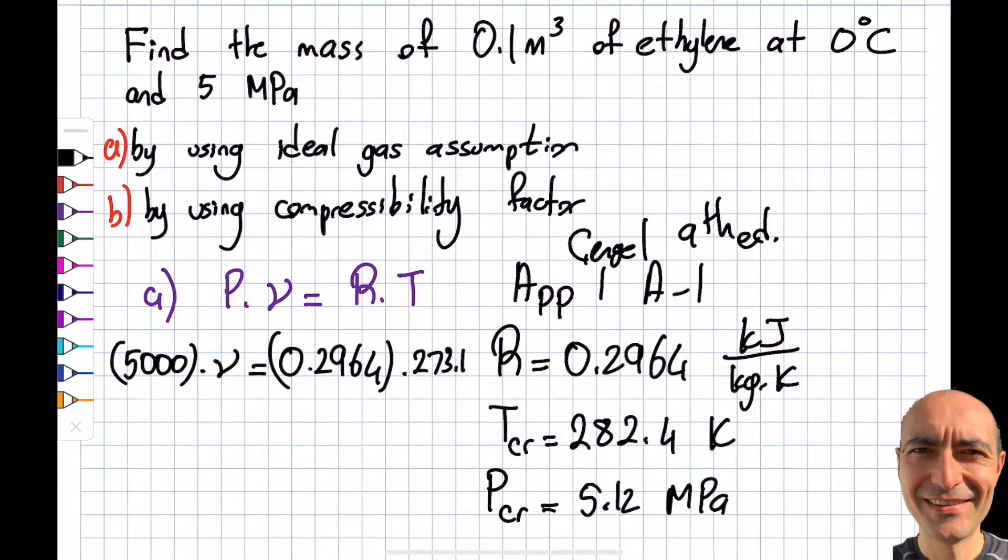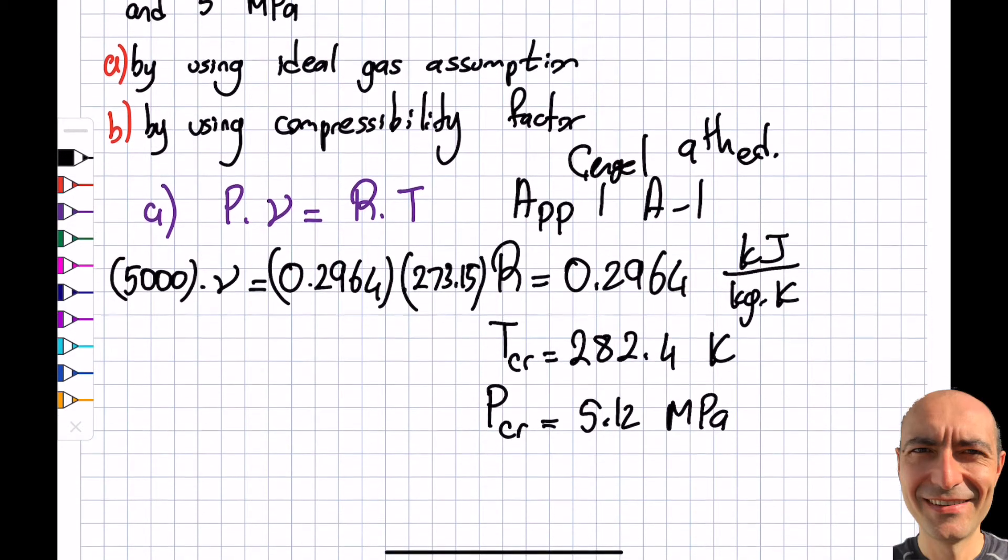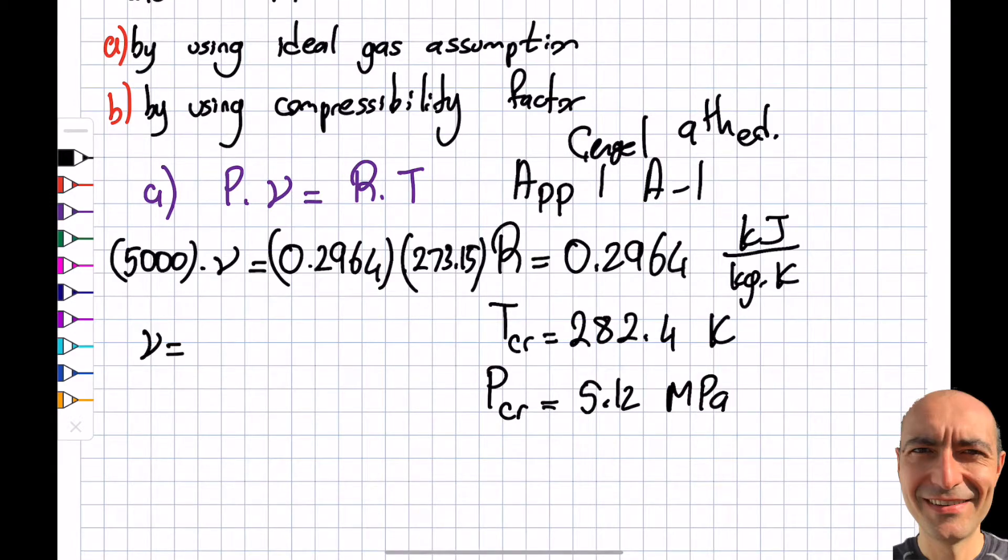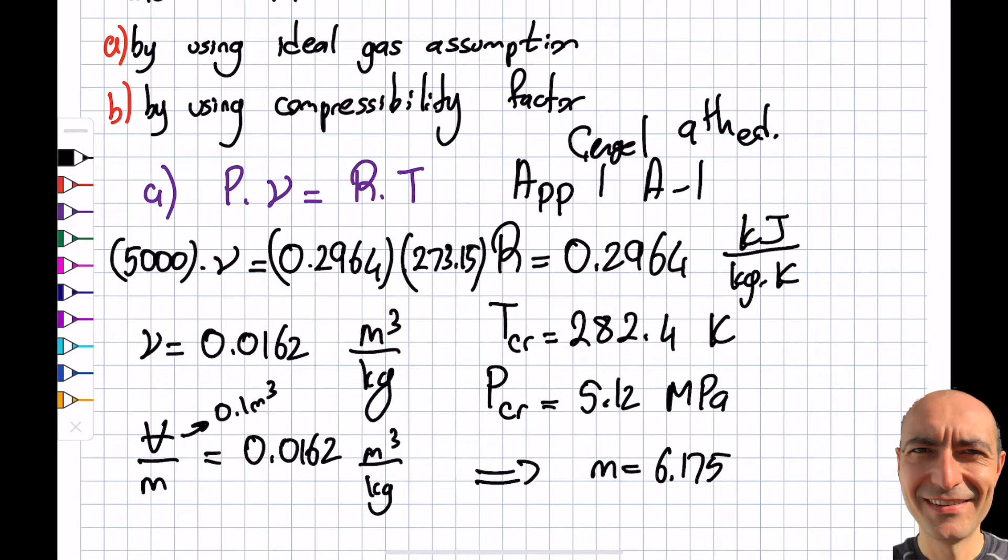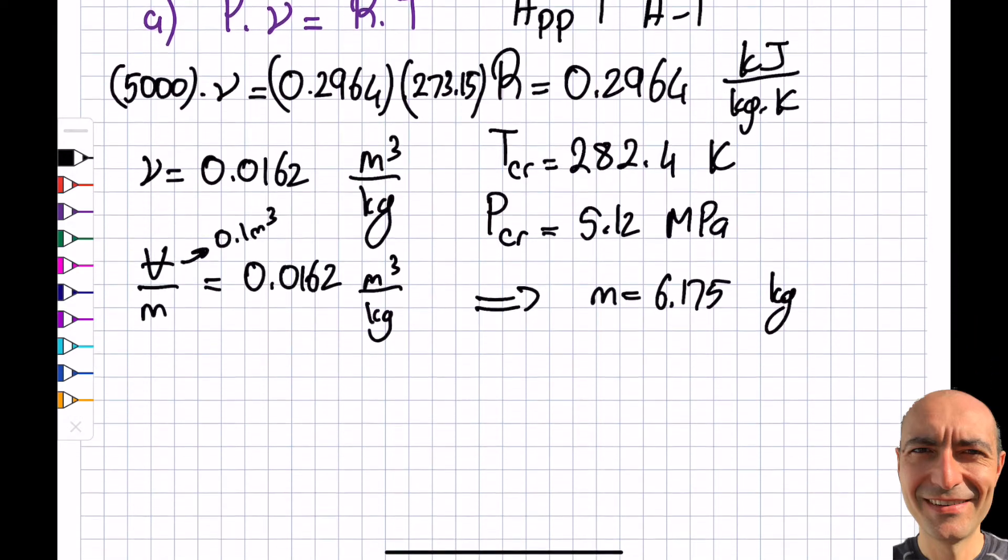The temperature is zero degrees Celsius, which is 273.15 kelvin. Kelvin equals Celsius plus 273.15. The specific volume I got is 0.0162 meter cube per kilogram. From here, given that the volume is 0.1 meter cube, you get your mass to be 6.175 kilograms.